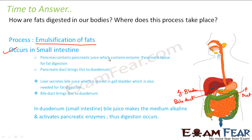Pancreas contains pancreatic juice with the enzyme pancreatic lipase for fat digestion, brought to the duodenum via the pancreatic duct. Similarly, the liver secretes bile juice stored in the gallbladder, which is also needed for fat digestion and is brought to the duodenum through the bile duct. In the duodenum, bile juice makes the medium alkaline and activates the pancreatic enzymes, which then act on the fats and digest them. This is how digestion of fat takes place.